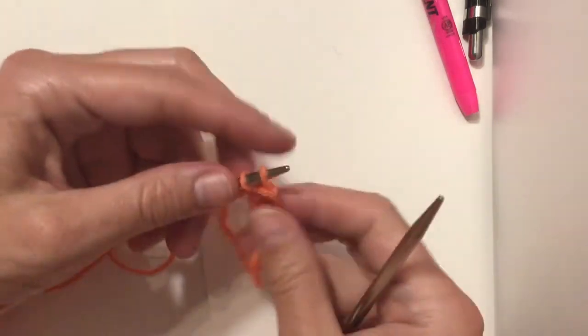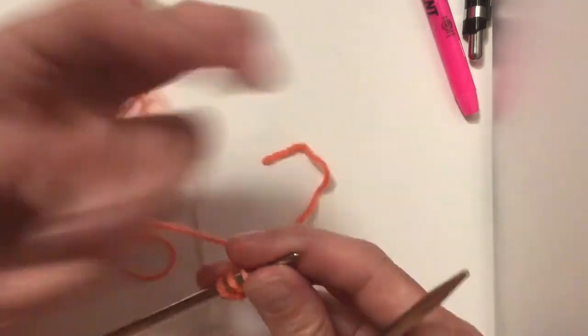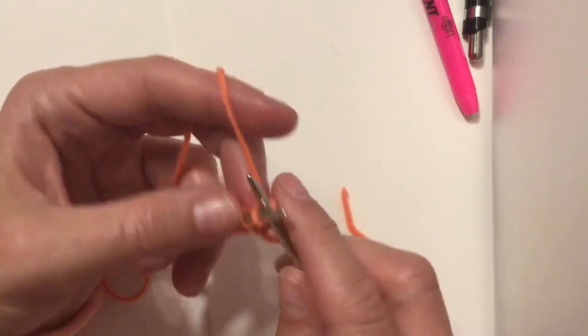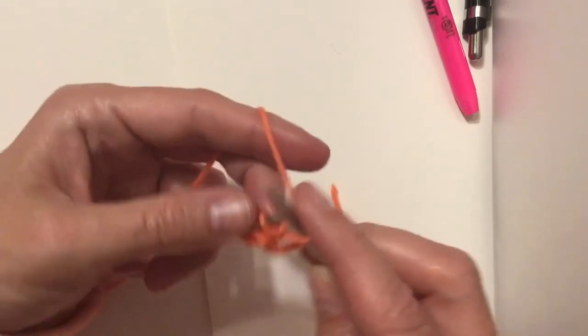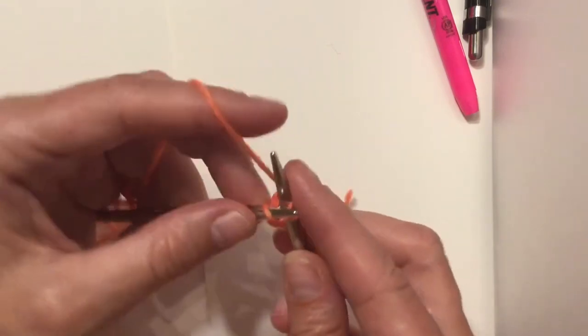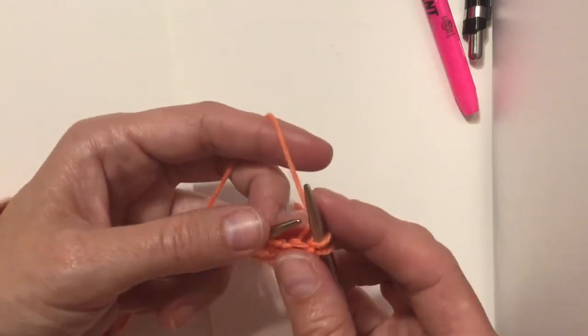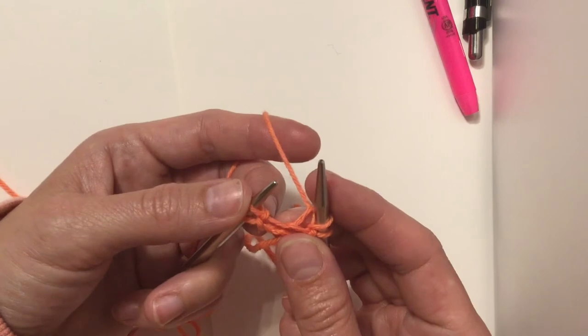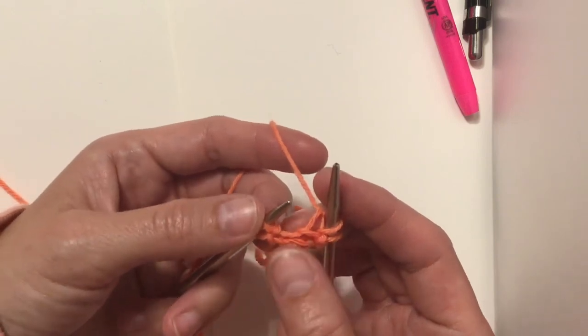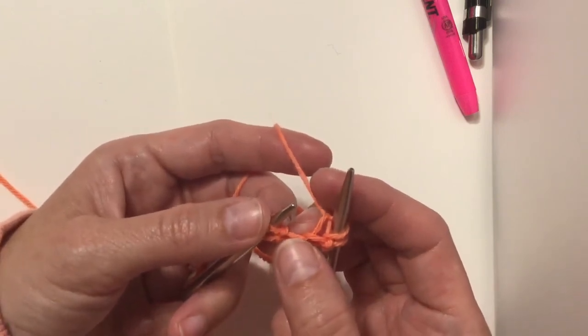Setup row number three is you knit two stitches like normal. One, two, and then you make one left. Now when you make one left, you want to pull the stitches apart a little bit and see this bar right there right by my thumb. You want to pick it up from the front.